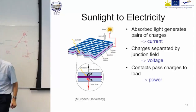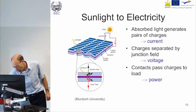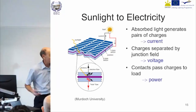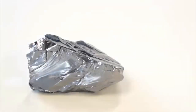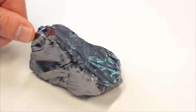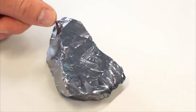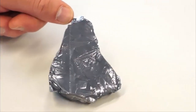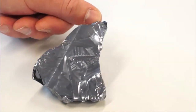I'll pass round a piece of silicon so you can see what the stuff looks like — don't lick it, it's not toxic though. That's a lump of silicon; you'll see it looks vaguely metallic but it isn't a metal, it's a semiconductor — it's not a full conductor.